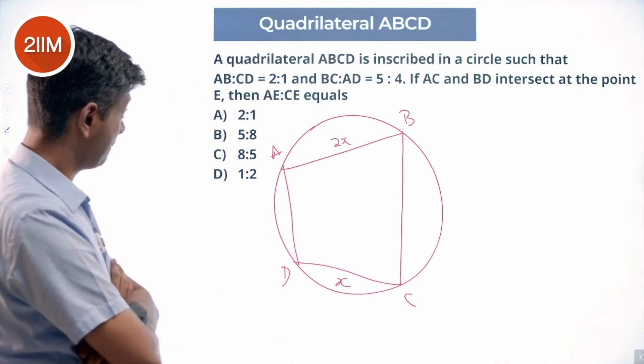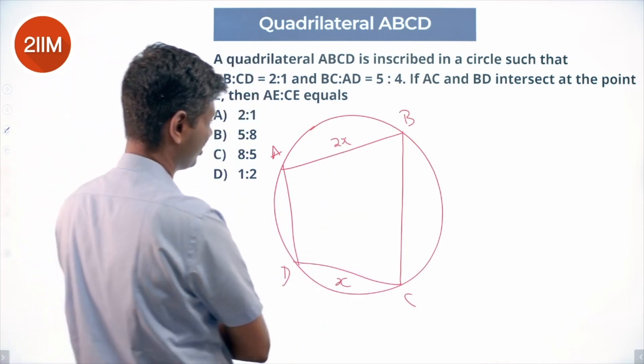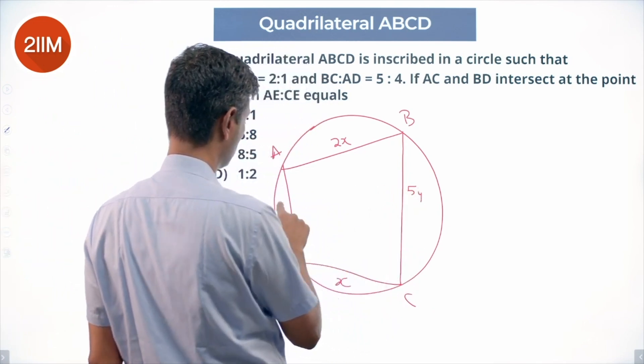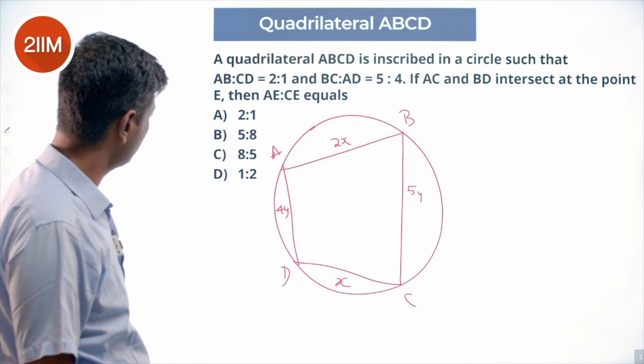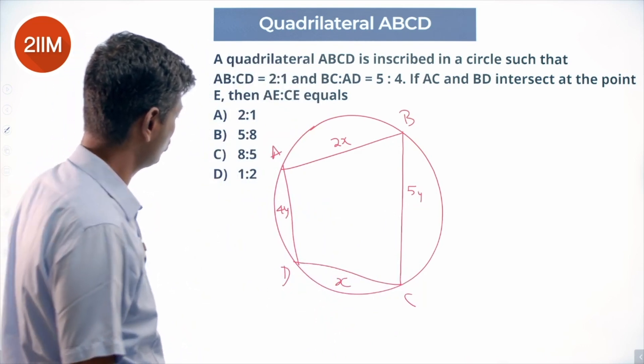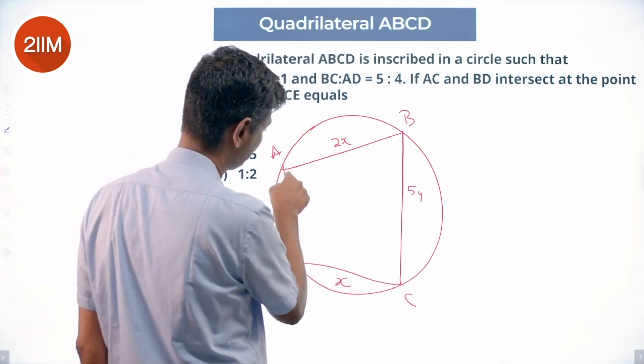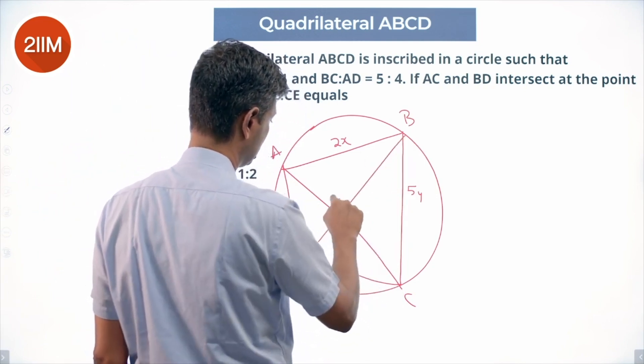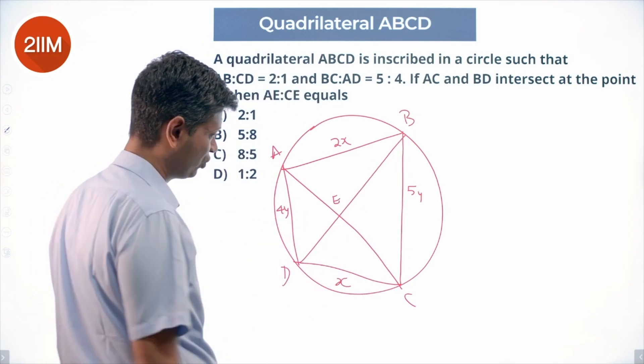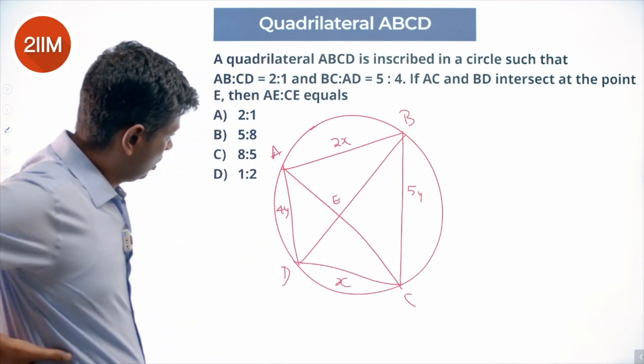So AB:CD = 2:1 and BC:AD = 5:4. If AC and BD intersect at point E, then we want to find AE:CE. Nice, lovely.